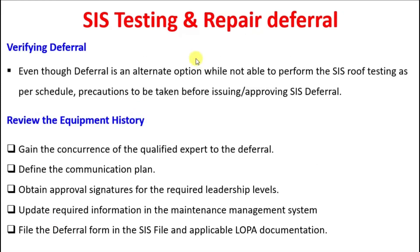Verifying deferral: even though deferral is an alternate option when SIS proof testing cannot be performed as per schedule, precautions must be taken before issuing and approving a deferral, reviewed and verified by multiple agencies. Steps include: review the equipment history; gain concurrence of a qualified expert; define the deferral and communication plan; obtain approval signatures for required leadership levels; update information in the maintenance management system; and file the deferral form in the SIS file and applicable documentation.